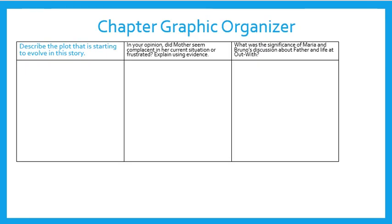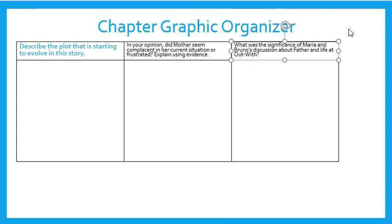Slide 15 is a graphic organizer to describe the plot that is starting to evolve in the story. In your opinion, did Mother seem complacent in her current situation or frustrated? Complacent means was she happy — you have to explain why you think she was happy or not. Then, what is the significance of Maria and Bruno's discussion about Father? Why do you think it was important that we saw Maria guiding Bruno and telling him the things that she told him? Do you think she would have said that if it wasn't important and serious for him to know?